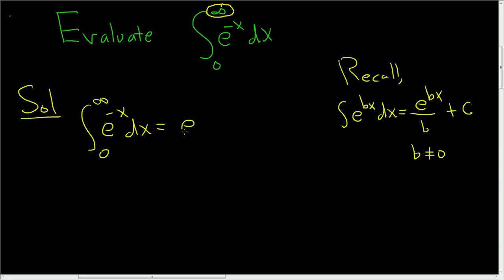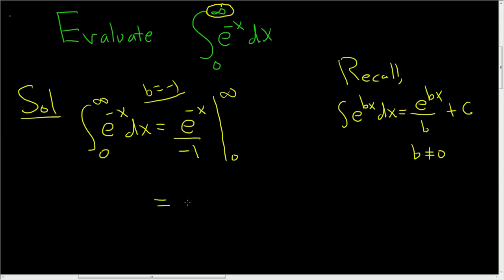This will be e to the negative x. Here b is negative 1, so we just divide by negative 1, going from 0 to infinity. So far nothing has changed — we're being a little sloppy, treating infinity as a number even though it's not. This gives us negative e to the negative x from 0 to infinity.